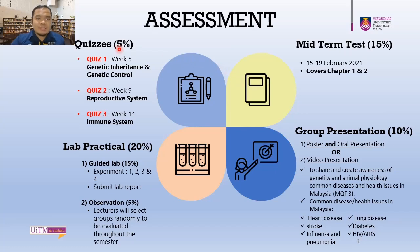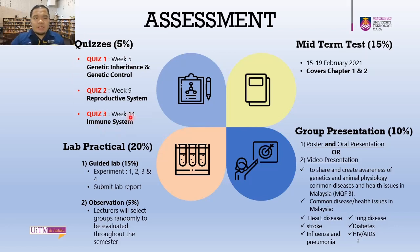Regarding the assessment schedule: Quiz 1 takes place at Week 5 and covers Genetic Inheritance and Genetic Control. Quiz 2 is on Week 9 and is on the Reproductive System. Quiz 3 is in the final week and covers the Immune System. The midterm test covers Chapters 1 and 2 and will be held between 15 to 19 February 2021.